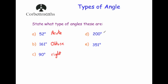Next, 200 degrees. If it's bigger than 180 but less than 360 degrees, then that's going to be a reflex angle. And likewise, 351 degrees — that's going to be reflex as well.